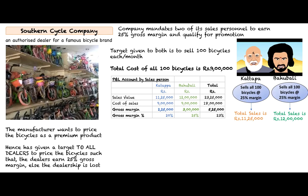Kattapa's sales value is rupees 11,25,000; cost of bicycles is rupees 9 lakh; gross margin is 2,25,000 — which is only 20% on sales. What Kattapa did was take the cost of 9 lakh, multiply by 25 divided by 100, work out the margin as 2,25,000, and add it to cost. But you never work out margin on cost — you always work out margin on selling price.